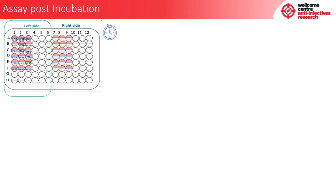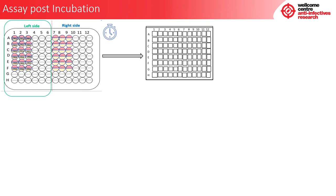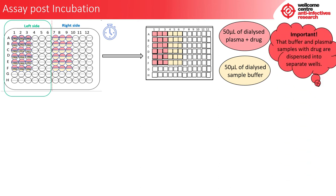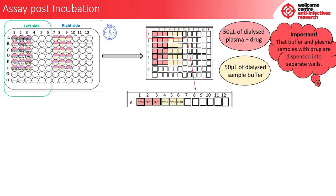Once the protein check has been carried out, post-incubation sampling can occur. Into a fresh 96-well 2 ml deepwell block, add 50 microlitres of dialyzed plasma and drug into columns 1 to 3, then add 50 microlitres of dialyzed sample buffer into columns 4 to 6 for all compounds. It is important that the buffer and plasma samples with drug are dispensed into separate wells. For example, for row A: columns 1 to 3 have the dialyzed plasma and drug samples for compound 1, and columns 4 to 6 have the dialyzed buffer samples also for compound 1.